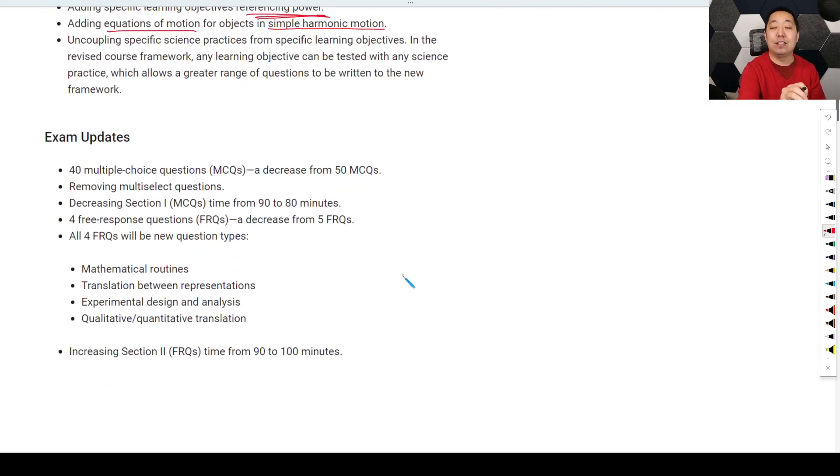The bigger deal for a lot of you are going to be the exam format. I think some of you who have taken AP Physics 1 might feel like, oh, man, this is so much better. First of all, we're going down to 40 multiple choice instead of 50 multiple choice. And then removing the two select questions, I think that's really good. That was a very confusing one. I think some people didn't quite understand it. There was only, like, five of those on an exam every year. So we are decreasing the time from 90 to 80 minutes. So you're decreasing it to 10 multiple choice. You're decreasing it to 10 minutes. You're getting more time per question.